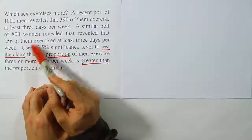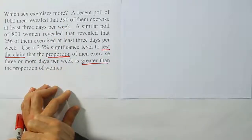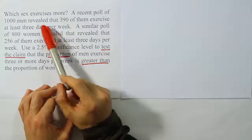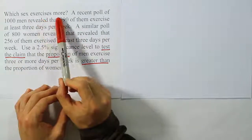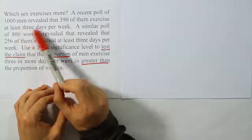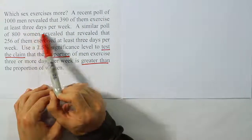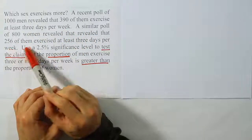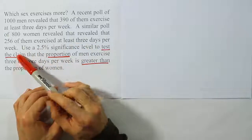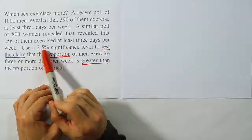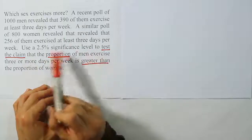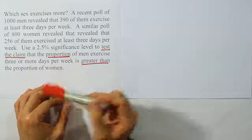In this video we're going to be looking at a problem based on the proportion of men and women who exercise at least three days per week. A recent poll of a thousand men revealed that 390 of them exercise at least three days per week. A similar poll of 800 women revealed that 256 of them exercise at least three days per week. Use a 2.5% significance level to test the claim that the proportion of men who exercise three or more days per week is greater than the proportion of women.